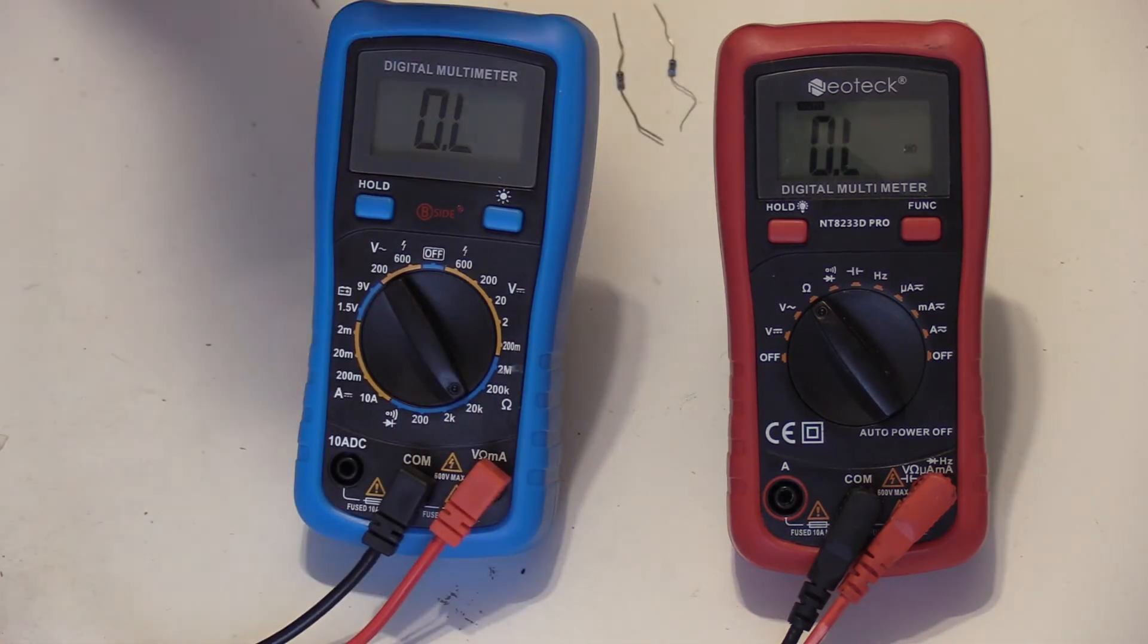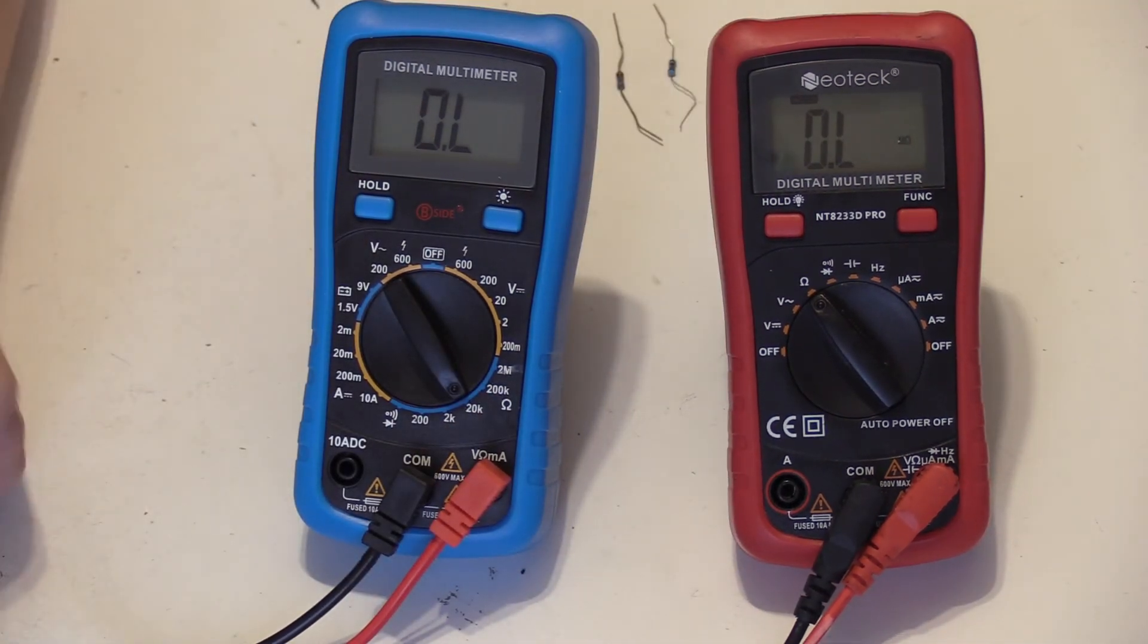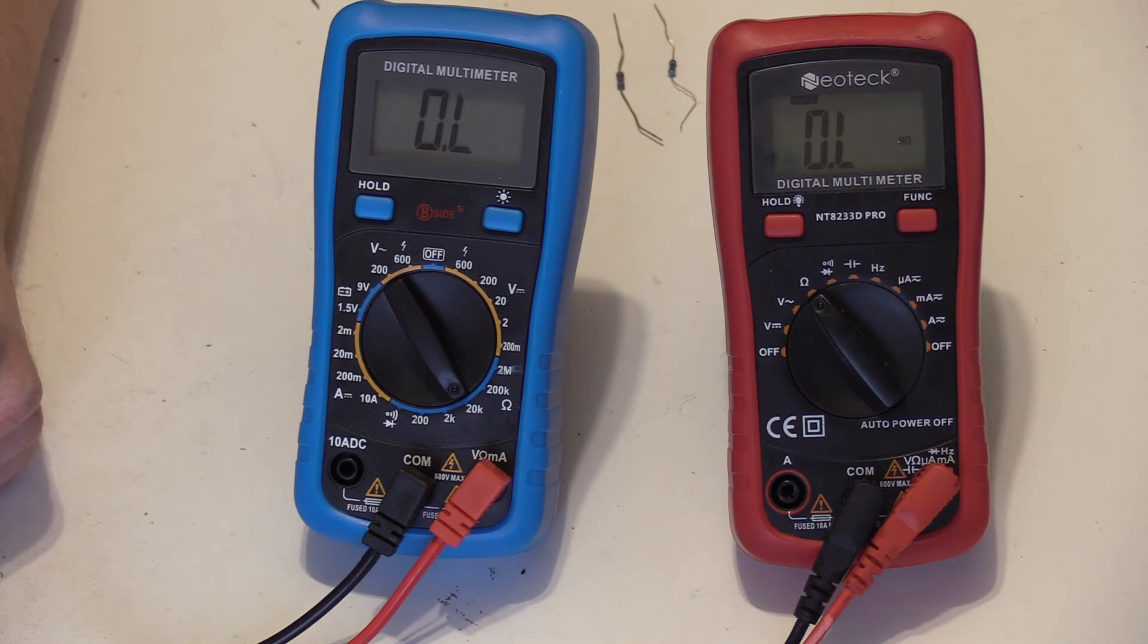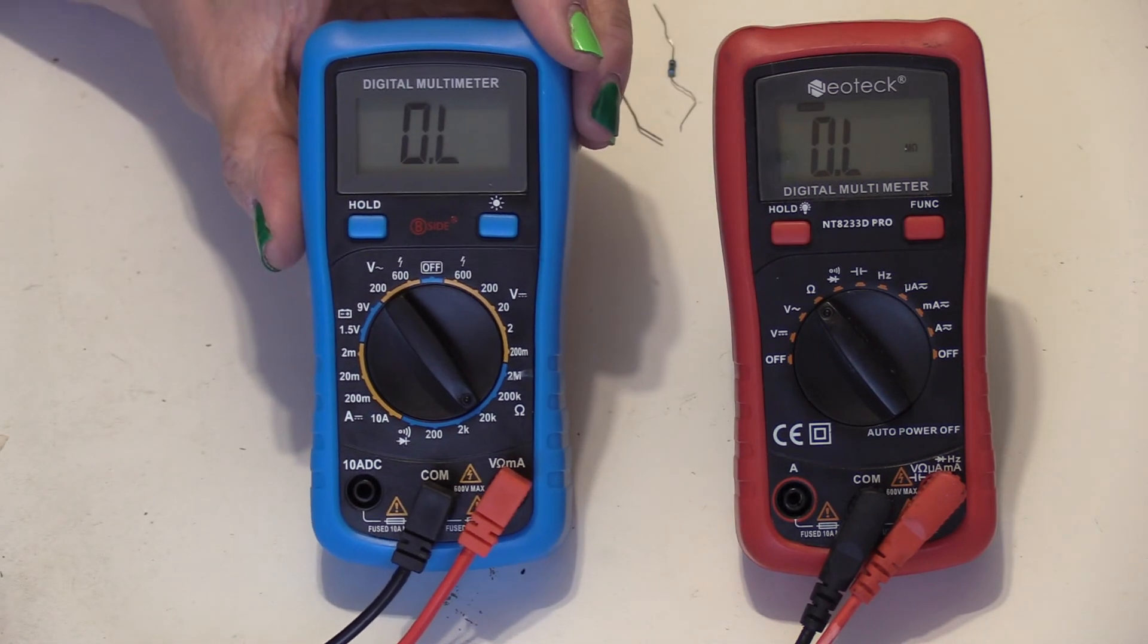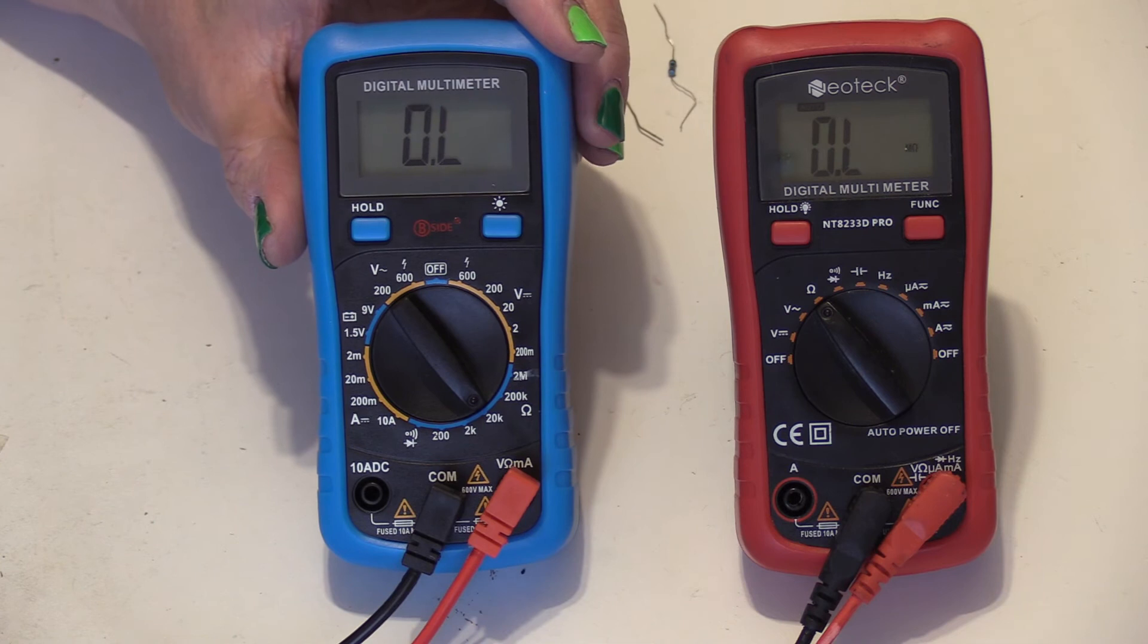My point being, with an auto-ranging meter like this one, it takes it a couple of seconds before it actually tells you the value of what it's measuring, whereas the manual configuration meter tells you instantly what it is.